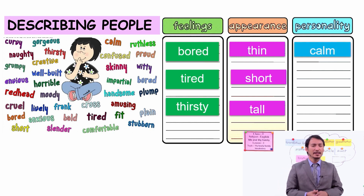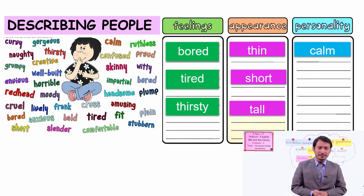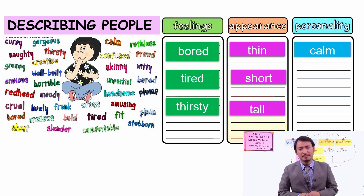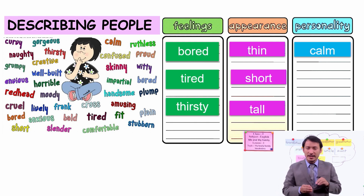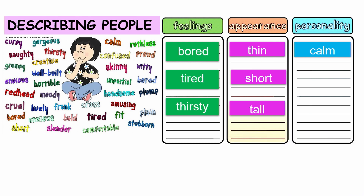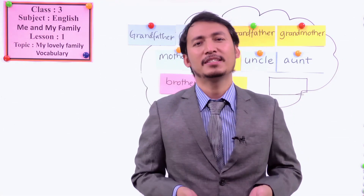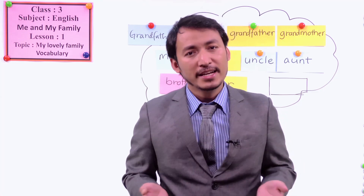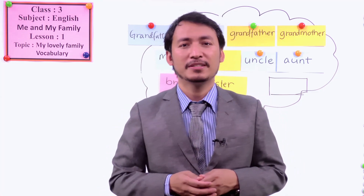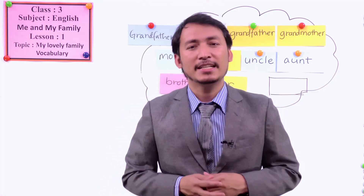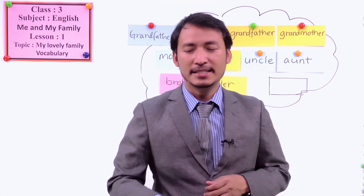Another type of words are personality words. You can say someone is calm when that person does not speak much. If your friend does not speak much, then you can say a calm person — the person has a calm personality.